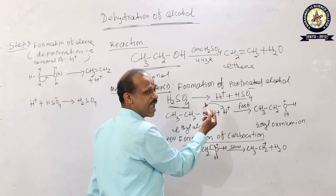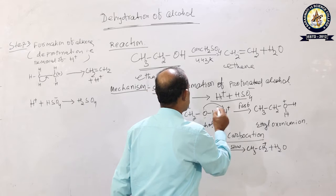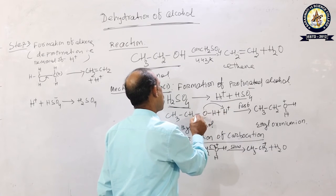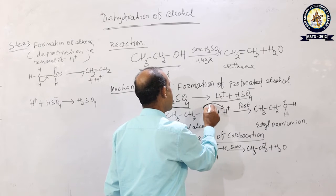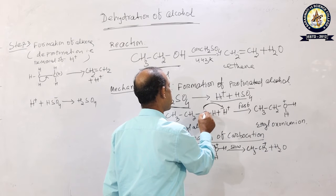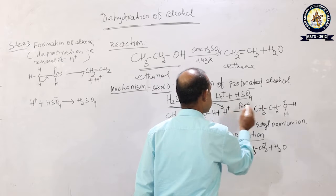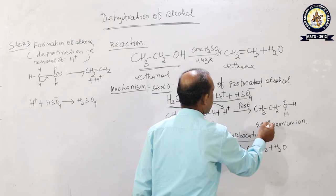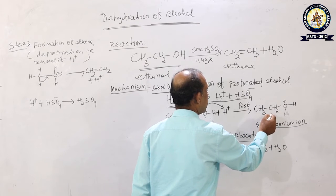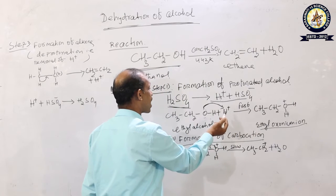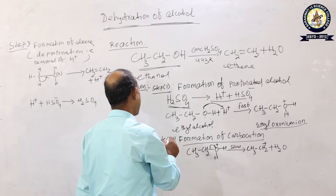Addition of a proton H⁺ to ethyl alcohol: the alcohol contains an OH group, and the oxygen atom has two lone pairs of electrons. It provides a lone pair to the H⁺ ion, causing oxygen to become positively charged. The intermediate formed is CH₃CH₂–O⁺H₂, called ethyl oxyanium ion or protonated alcohol — a reactive species.